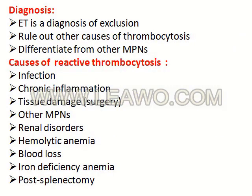Diagnosis of essential thrombocythemia is a diagnosis of exclusion. We must rule out other causes of thrombocytosis, then differentiate from other myeloproliferative neoplasms. Causes of reactive thrombocytosis include infection, chronic inflammation, tissue damage, renal disorders, hemolytic anemia, blood loss, iron deficiency anemia, and post-splenectomy. The most common causes are chronic inflammation, post-splenectomy, and iron deficiency anemia.